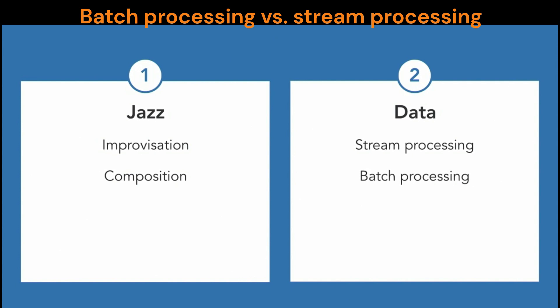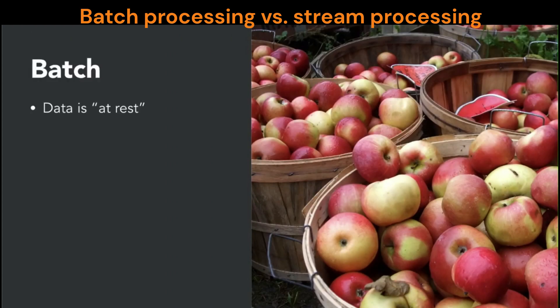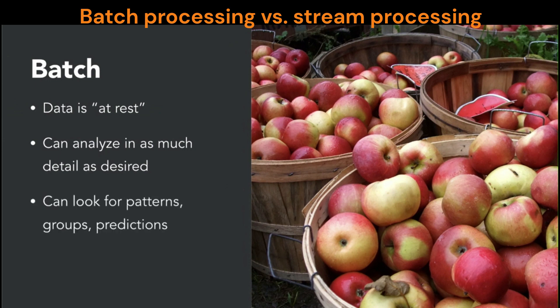Batch processing is data at rest — meaning it's static, it's stationary. This is the kind of data I work with. It's data that's in a data set and that's what it is. You can analyze that data in as much detail as you desire. You have time to go back and forth with it. You can look for patterns, find groups, and make predictions based on rather sophisticated and time-consuming models. All of those are possibilities with standard batch data.